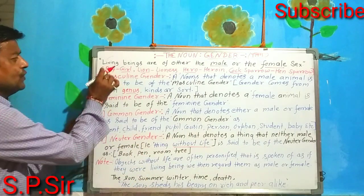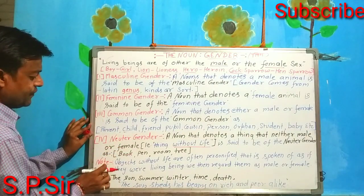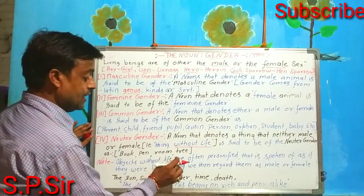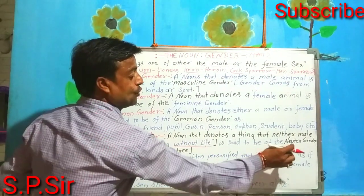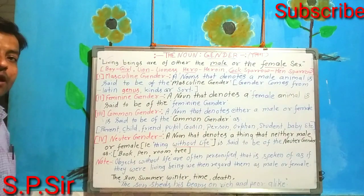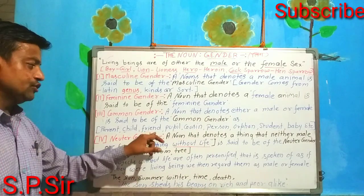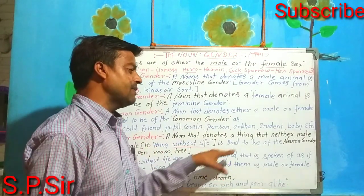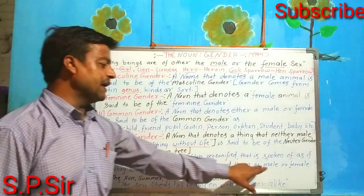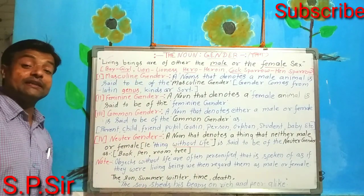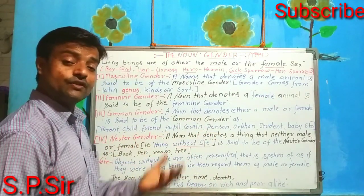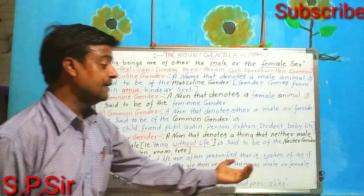So I hope all of you understood about the four types of gender. Here finally I write down a note: objects without life are often personified — that is, spoken of as if they were living, and we regard them as male or female. Non-living things sometimes come across as living things and react like living things.